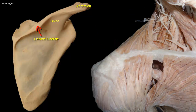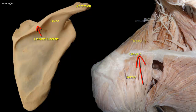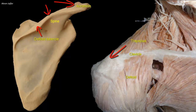The deltoid is attached in continuity from the lower border of the spine of the scapula to the lateral border of the acromion, and then the attachment is carried to the anterior border of the lateral third of the clavicle. The trapezius attachment has the same extent but on the opposite side, extending from the posterior border of the lateral third of the clavicle, medial border of the acromion, and the superior border of the spine of the scapula.